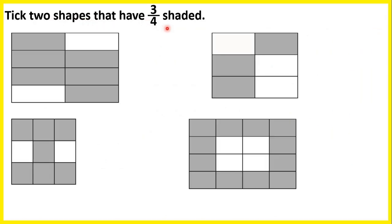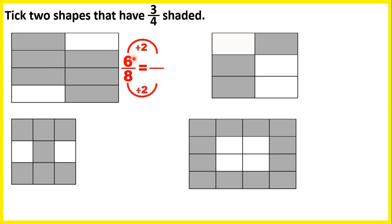Tick 2 shapes that have 3 quarters shaded. For this shape, we have 6 parts shaded and 8 parts altogether, so 6 eighths of this shape is shaded. But that's the same as 3 quarters, because we can simplify 6 eighths by dividing both the numerator and denominator by 2, and that gives us 3 quarters. So because 6 eighths is shaded, and that's the same as 3 quarters, we can tick this shape.